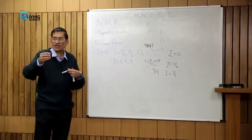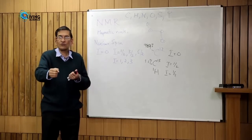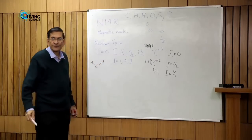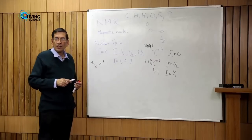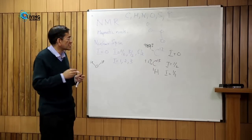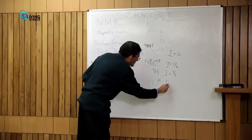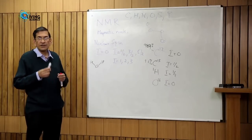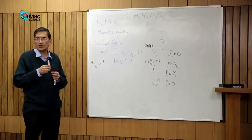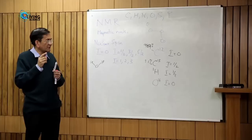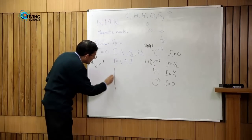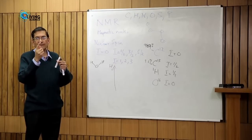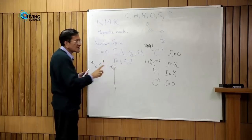Suppose I take a glass of water and put it in a magnetic field. I will have water molecules H₂O. The hydrogens have spin I equal to one-half. Oxygen-16 has I equal to 0, so it is the abundant but NMR-silent oxygen isotope. The hydrogens have a nuclear magnetic moment and because they have a nuclear magnetic moment and are like spinning magnets, they will precess about the field direction.